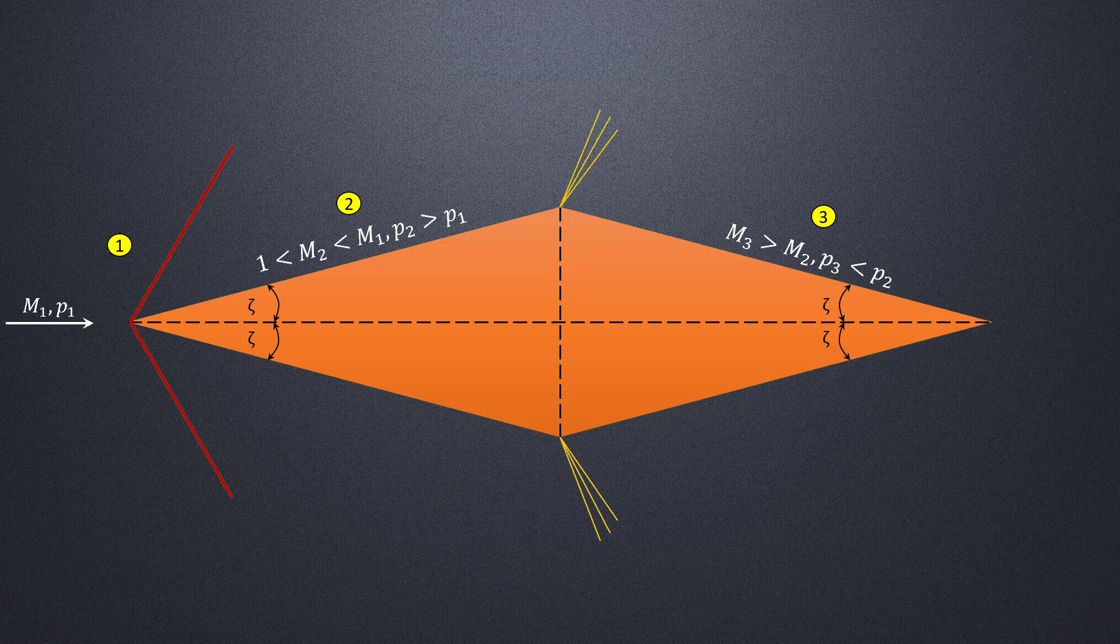At the trailing edge of the airfoil, the flow is once again turned to be parallel to the freestream direction. This results in formation of an oblique shock wave, through which the flow is recompressed back to nearly freestream value.